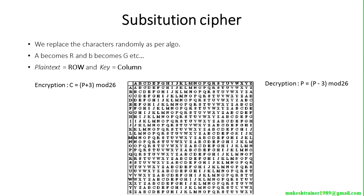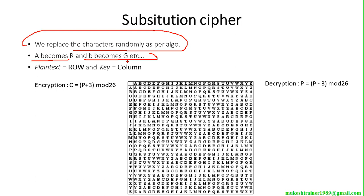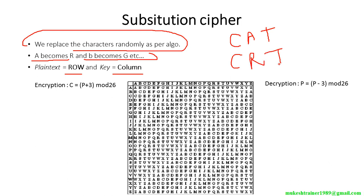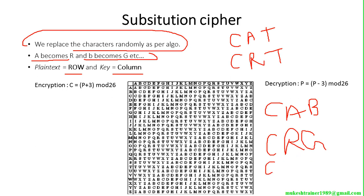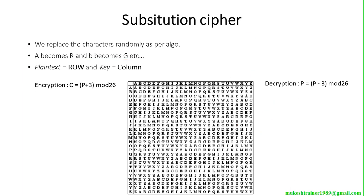Next is substitution cipher: we replace each character randomly as per an algorithm. For example, A becomes R and B becomes G. So plain text CAB: C remains C, A becomes R, B becomes G — giving cipher text CRG. To decrypt, reverse the substitution back to CAB. That is the substitution cipher method.